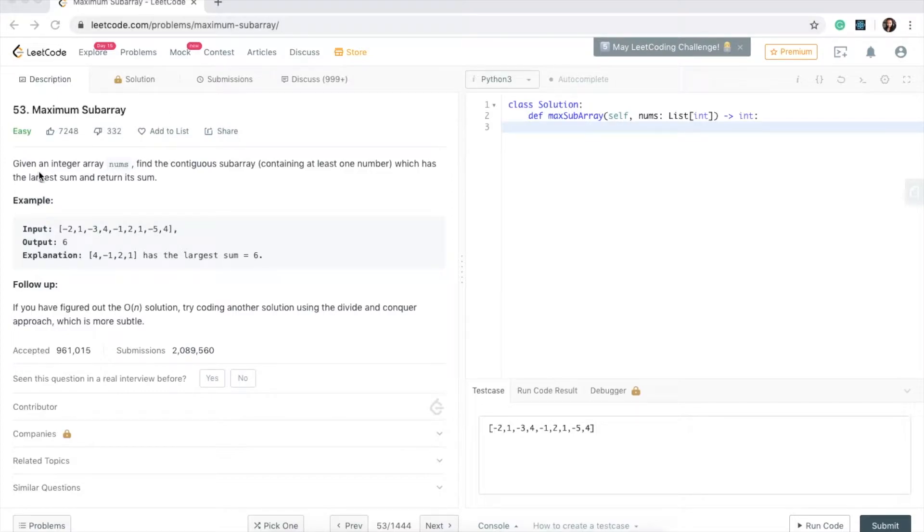The question is asking, given an integer array nums, find the contiguous subarray. Contiguous subarray means that we need to find a subset in this array that are of consecutive numbers. So we can pick like these numbers, but we can't pick one number here and three numbers here. So that's what contiguous means, which has the largest sum and return its sum.